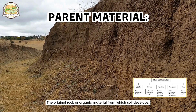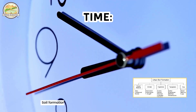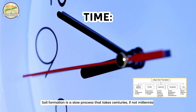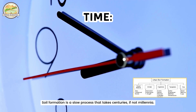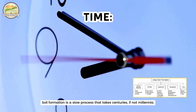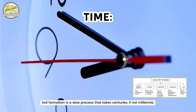Parent material is the original rock or organic material from which soil develops. Time is also critical — soil formation is a slow process that takes centuries, if not millennia.